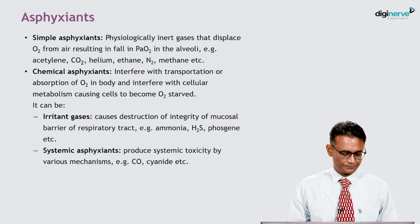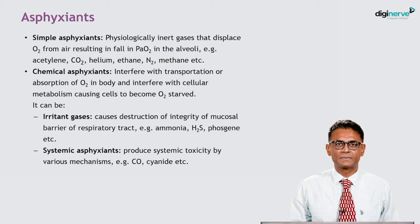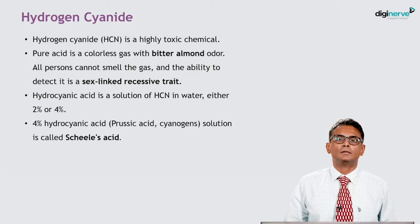Systemic asphyxiants produce systemic toxicity by various mechanisms. Examples are carbon monoxide, cyanide, etc. The brain is commonly affected. Now coming to hydrogen cyanide.